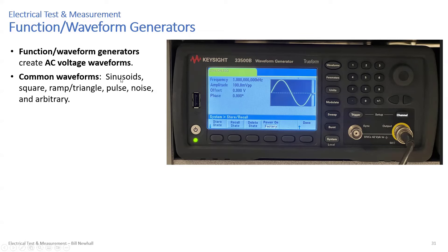RF signal generators are typically sinusoids or modulated sinusoids, but function generators create ramp waves with different rise times. Arbitrary waveform generators are something special — sometimes built into these generators — meaning you can take a CSV file or binary file, load that waveform into the generator, and have it play periodically or just one shot when a trigger is detected.